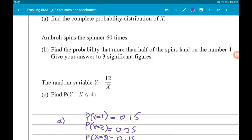Okay, then for part B, we're told Ambreh spins the spinner 60 times. We want to find the probability that more than half of the spins will land on the number 4, giving our answer to three significant figures.